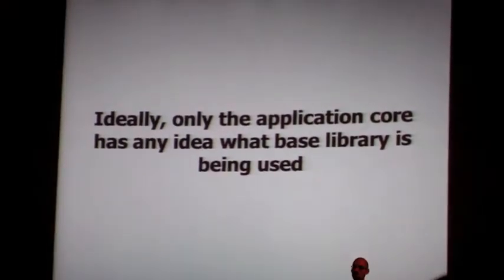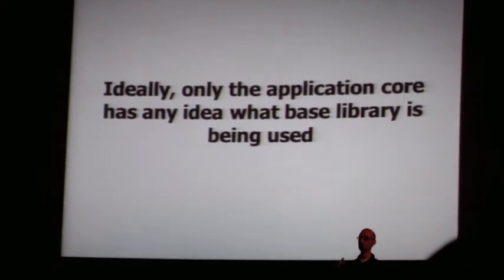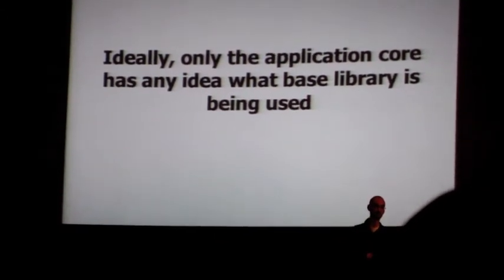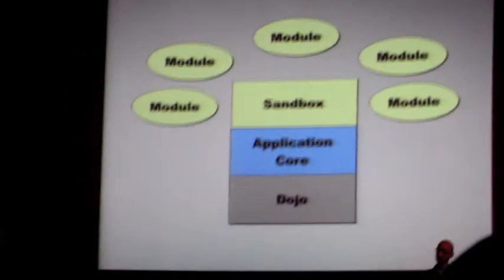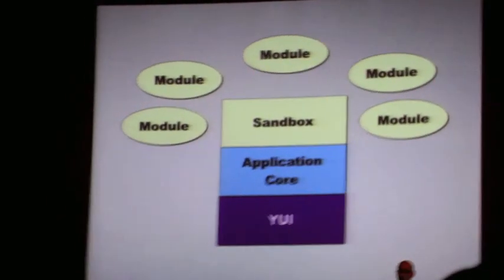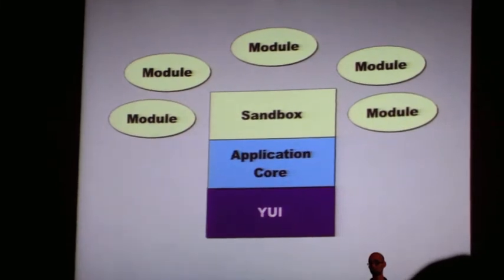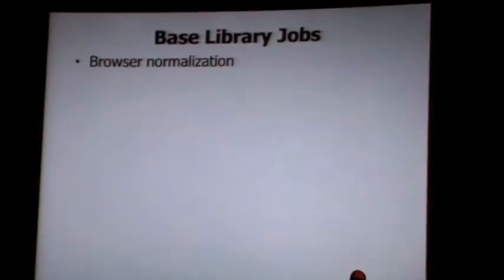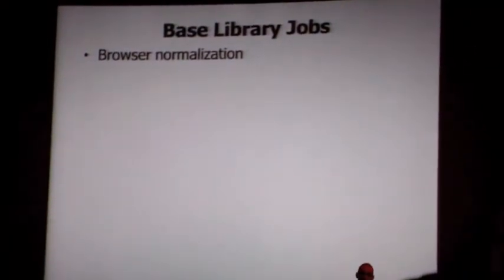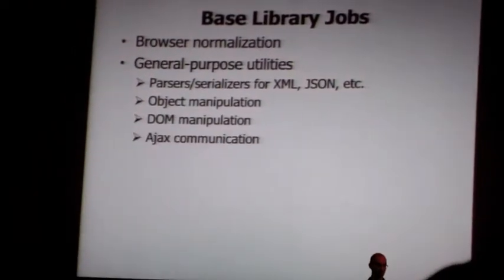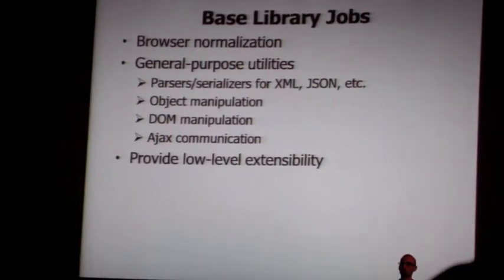You want developers at a higher level doing things that have meaning to your business, rather than figuring out which jQuery method to use. If you manage to abstract it away, at any point in time you can decide to swap out your base library — start with Dojo and decide later to switch to YUI, and it really doesn't matter. The base library jobs are: browser normalization above all else, general purpose utilities, parsers and serializers, DOM manipulation, low-level Ajax, and low-level extensibility.